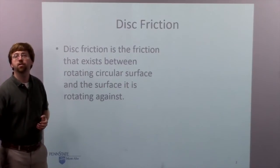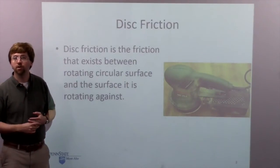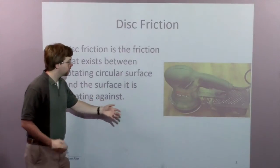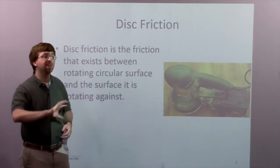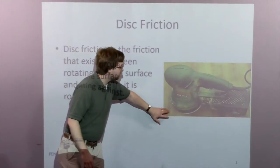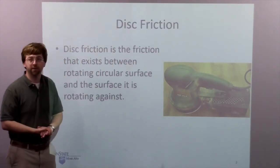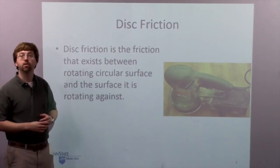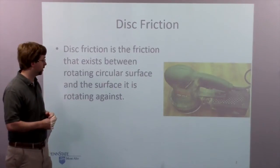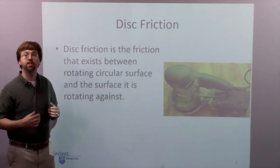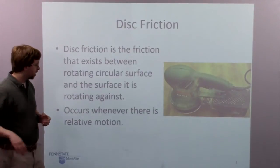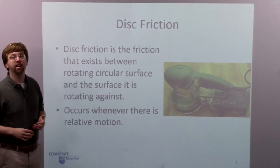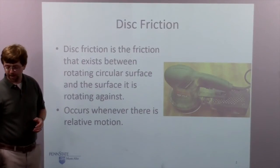A clear example of this disk friction scenario is a disk for an orbital sander. We've got a circular pad that's rotating and pressed against some sort of wooden surface. As you can imagine, if you press these two things together, there's going to be some moment due to friction forces. This moment is due to disk friction between those two surfaces, and it occurs whenever we've got relative motion — one surface sliding against another in a circular fashion.